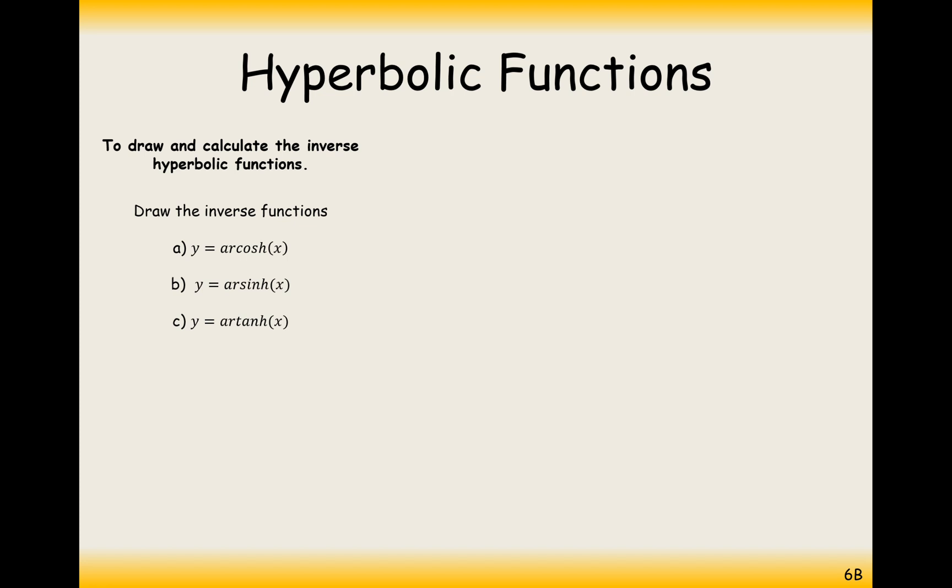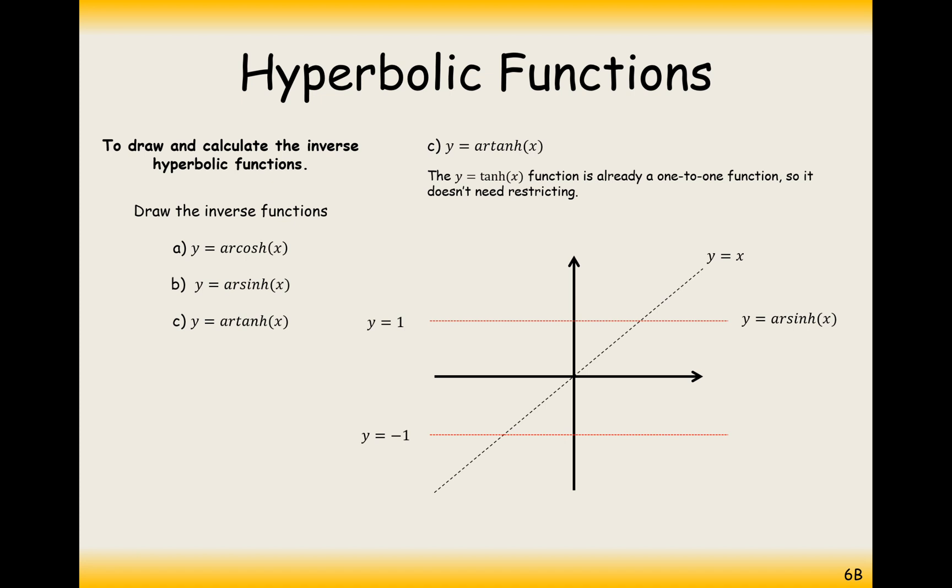Moving on to the final graph, part C is the y equals artanh graph. This is already a one-to-one function as well, so that doesn't need restricting. It's going to go through the line y equals x. We've got those asymptotes for the graph of y equals tanh.